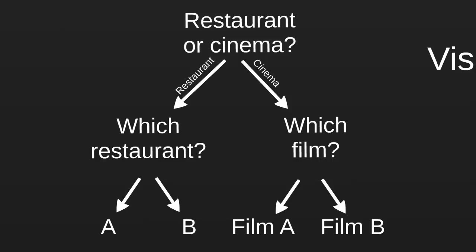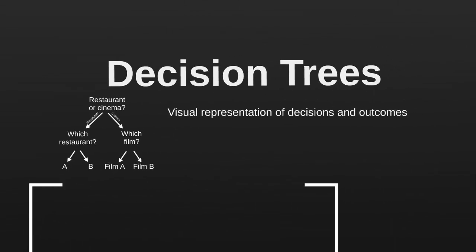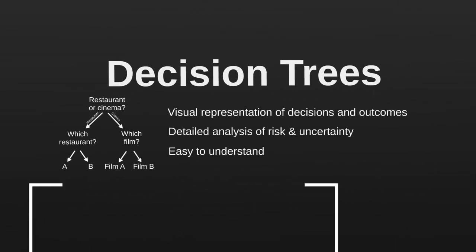Once we've laid out the decisions in this decision tree form, we can flesh out the diagram further by adding some numbers, which we'll come to in a moment. Once we've added these numbers, we have something that allows us to conduct a detailed analysis of the risk and uncertainty we're facing. And because it's laid out in a neat visual way, decision trees are relatively easy to understand once you're used to seeing them and working with them. Let's go through a more detailed example.